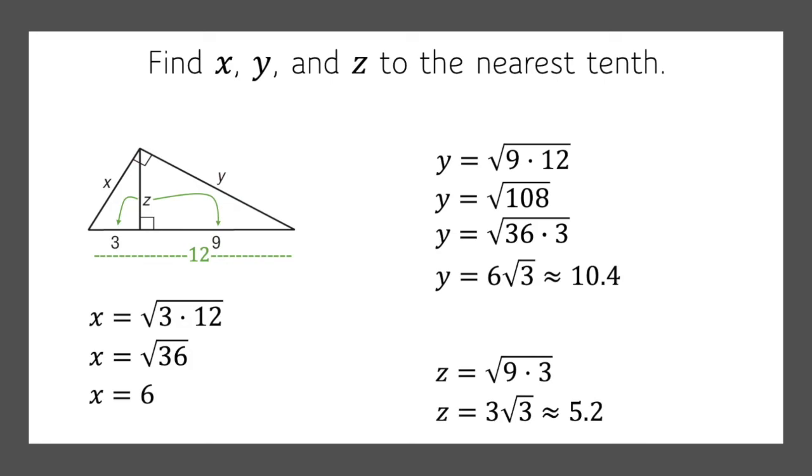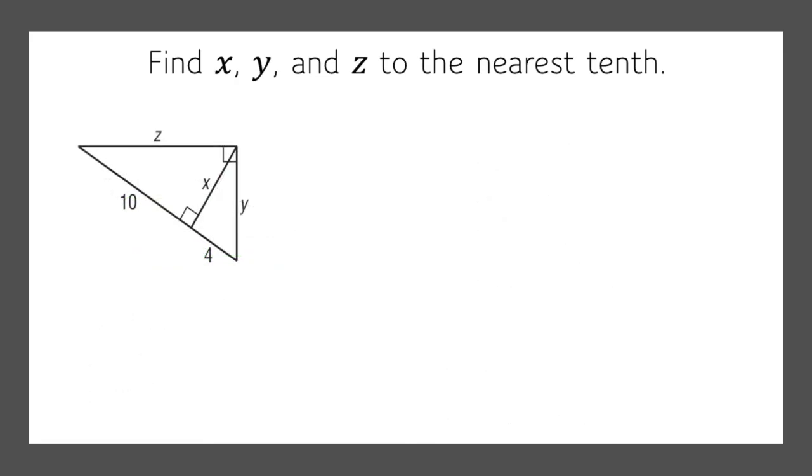Let's do one more. Again, we're going to find X, Y, and Z. X this time is the altitude, so we'll start with that one. It's the geometric mean of 10 and 4. So the square root of 10 times 4, which is 2 times the square root of 10, or approximately 6.3.